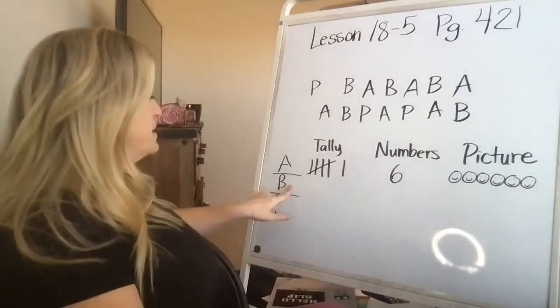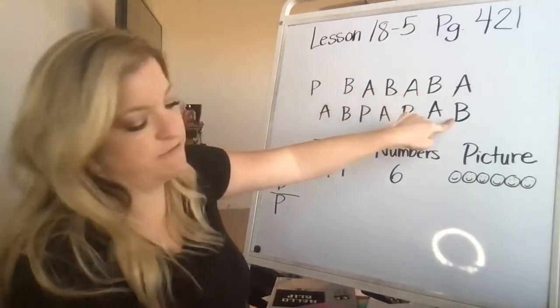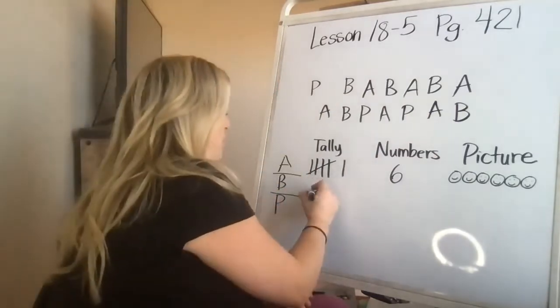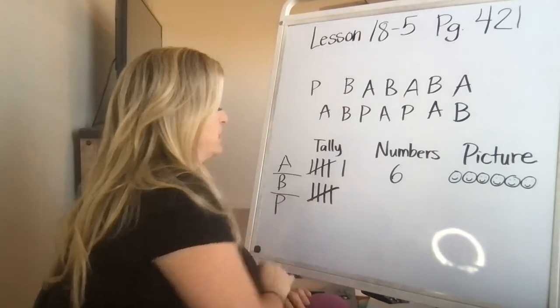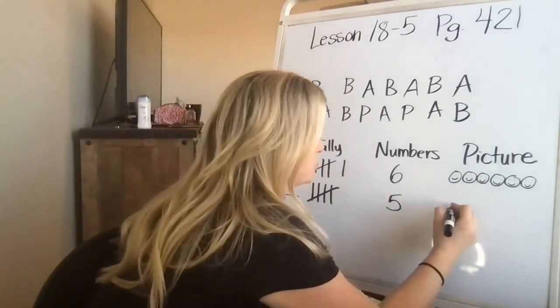Then we need to do bananas. B for bananas. One, two, three, four, five. Five bananas. One, two, three, four, bundle it across five. Write in a number five next door. And then we're going to draw five.